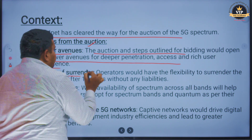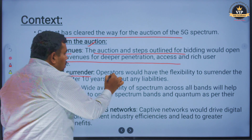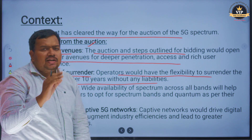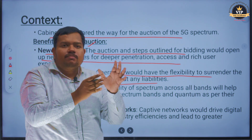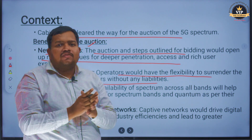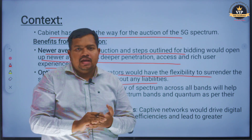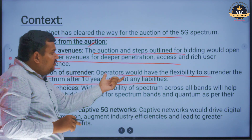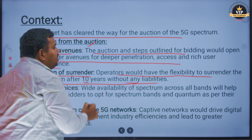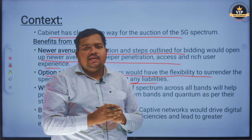The second benefit is the option of surrender. In the auction, one of the major things is the option of surrender. Operators would have the flexibility to surrender the spectrum after 10 years without any liabilities. So if a telecom company fails, they are not permanently stuck — they can surrender the spectrum without liability after 10 years.